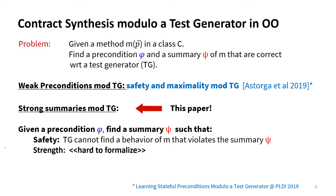My approach to mining contracts is to learn them using test terminators. Given a method M in a class C in an object-oriented language, I want to learn two things: a precondition phi and a summary psi of M. The guarantee of correctness of the mined specification is in terms of the test terminator. For preconditions, this notion is formalized in my previous work. Preconditions are safe when the test terminator is unable to find inputs that cause the program to crash. Maximality is a more complex condition. The focus of the current work is on how to learn summaries modulo a test terminator.